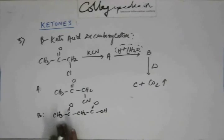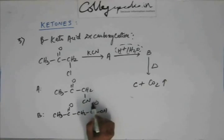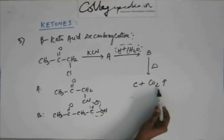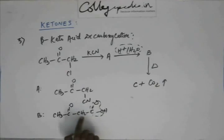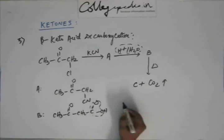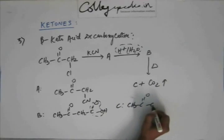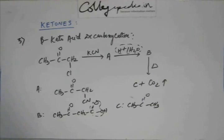So you heat the beta-keto acid and the carboxylic acid part goes off as CO2, and the hydrogen comes onto the CH2. Therefore C is acetone. That's it — C is acetone.